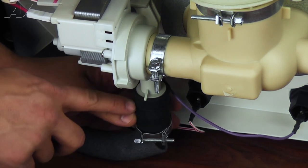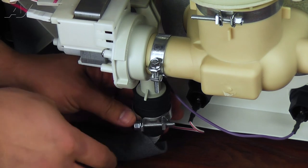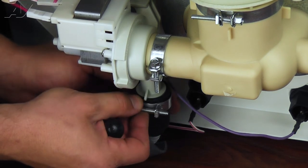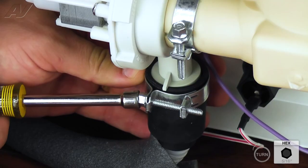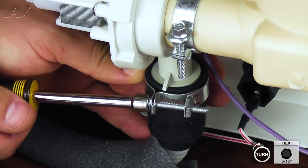Slide the drain hose back onto the pump until it stops and seats firmly. Place the clamp over the ridge on the hose to show the correct position. Tighten the 5/16 inch screw to secure it in place.